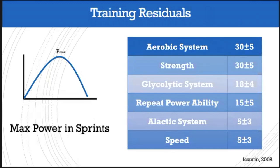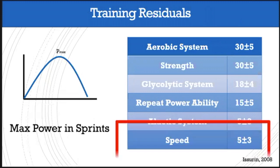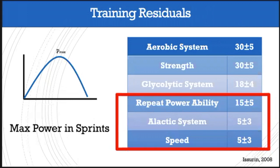Looking at training residuals — there's a great chart by Isrin showing when we lose these qualities. In team sport, we focus on repeat power ability, the alactic system, and speed. If you look at how quickly we lose speed — it's five days plus or minus three. So if you're injured for two weeks, there's a really good chance you're going to lose your speed. And if you don't have hamstring health, how do you expect to run? A hamstring injury could be anywhere from one to four weeks depending on the grade, or four-plus weeks if it's severe.